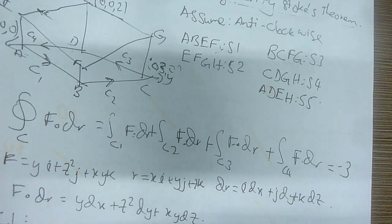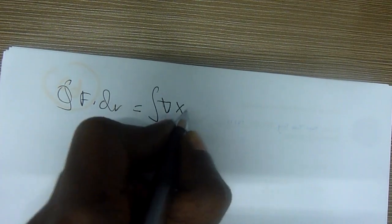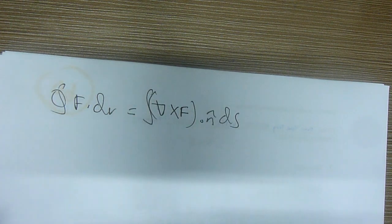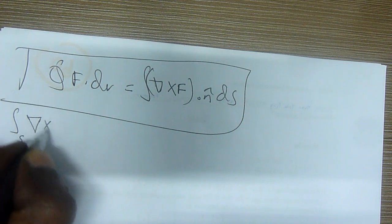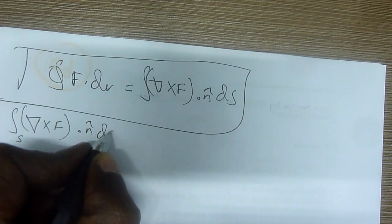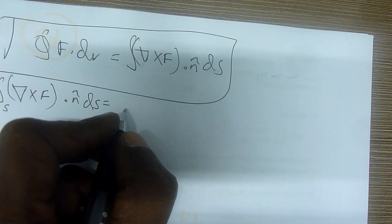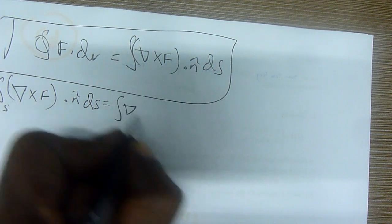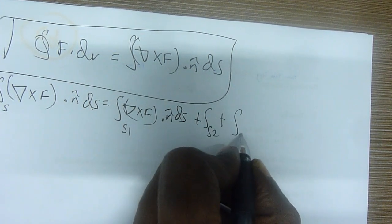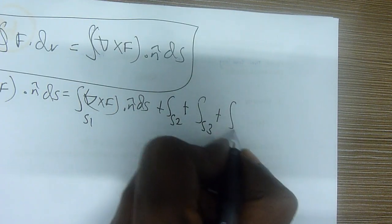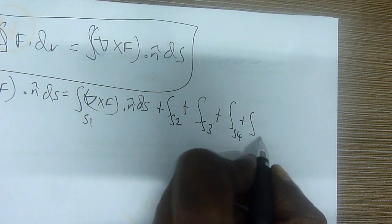Now, if we proceed to do the same thing, we can say F·dr equals the surface curl integral. The curl of the surface must be the same — this is what we are learning. We are going to take the surface portion and calculate. How many surfaces do we have? We have five surfaces to calculate: S1, S2, S3, S4, S5.